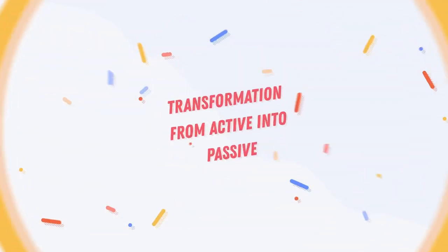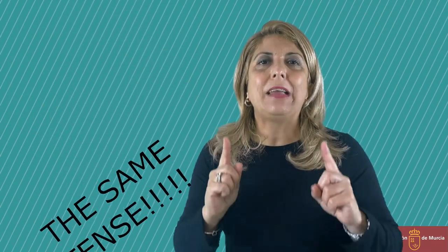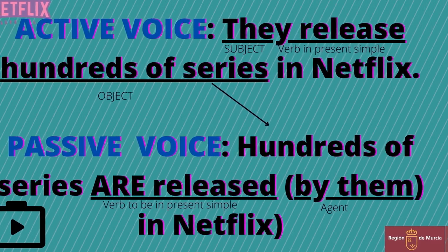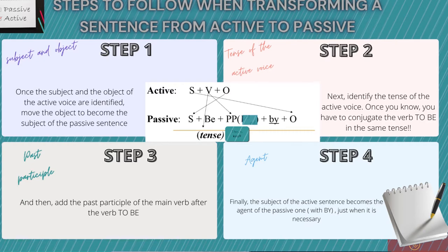Now let's move on to the nitty-gritty of the transformation. In transforming the sentence from active to passive, remember that we maintain the same tense. For example: 'They release hundreds of series on Netflix' becomes 'Hundreds of series are released on Netflix.' You will take the following steps: once the subject and the object of the active voice are identified, move the object to become the subject of the passive sentence. Next, identify the tense of the active voice, because you have to conjugate the verb 'to be' in the same tense. Then add the past participle of the main verb after the verb 'to be.' Finally, the subject of the active sentence becomes the agent of the passive one with 'by' — but remember, you can include it or not, depending on how concrete you want to be.